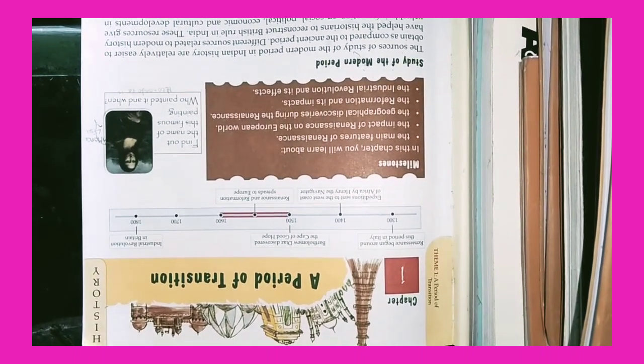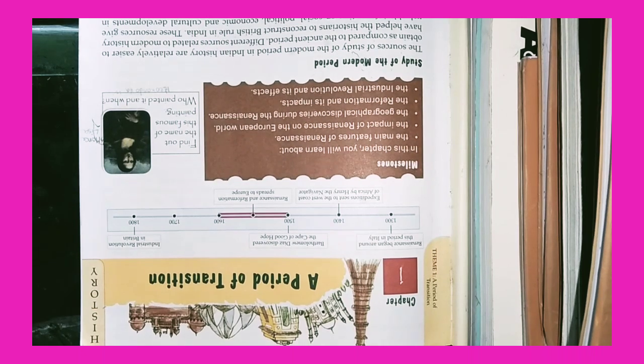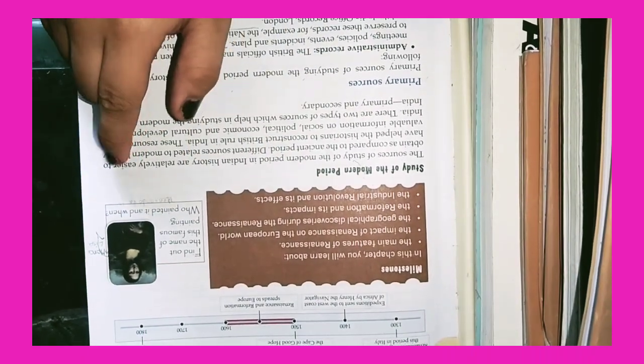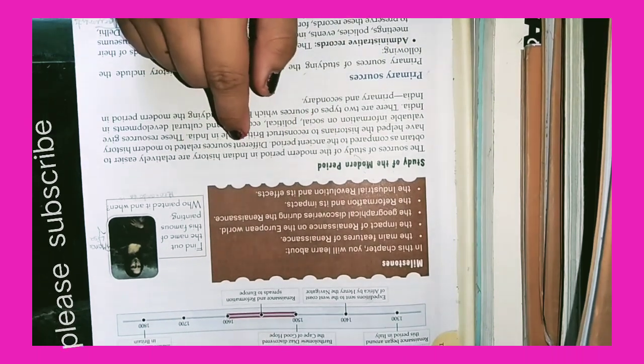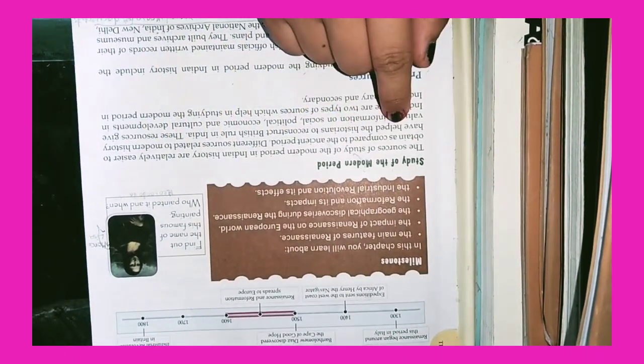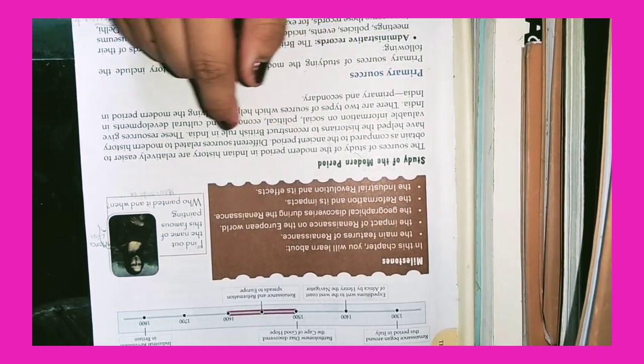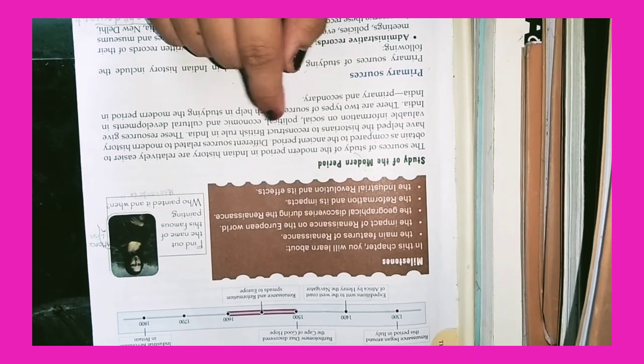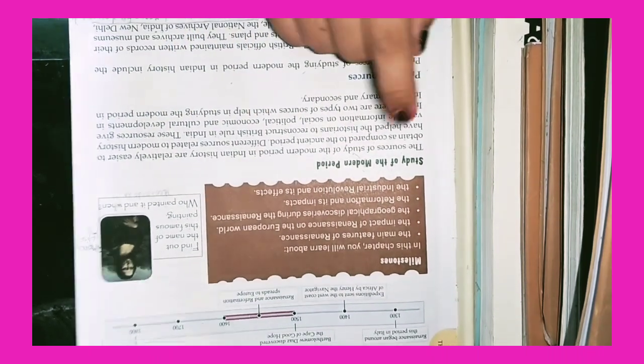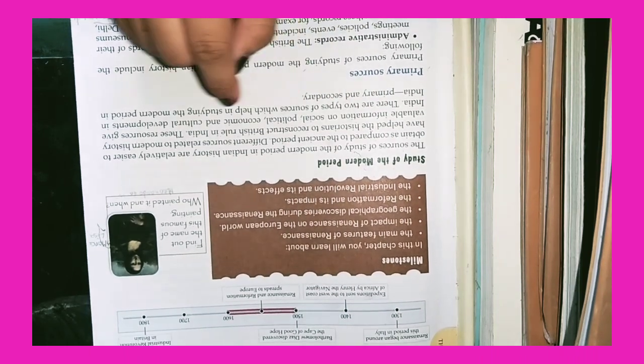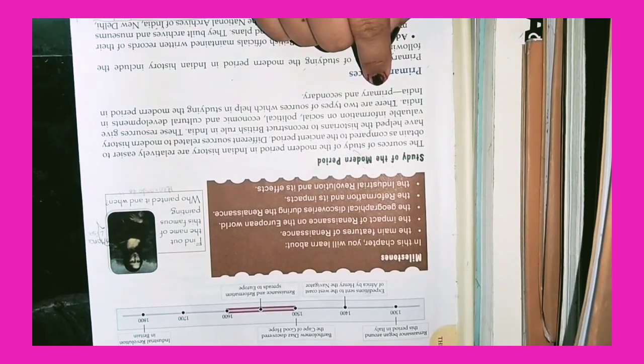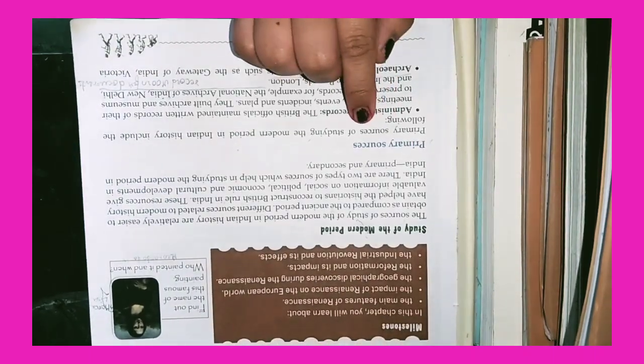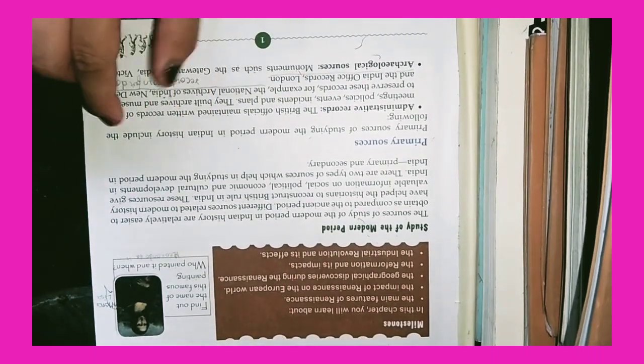Chapter 1: A Period of Transition. Study of the Modern Period. The sources of study of the modern period in Indian history are relatively easier to obtain as compared to the ancient period. Different sources related to modern history have helped historians reconstruct British rule in India. There are two types of sources which help in studying the modern period in India: First is Primary and Second is Secondary.